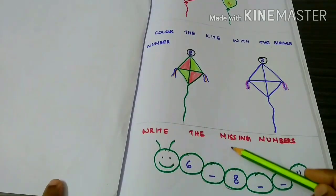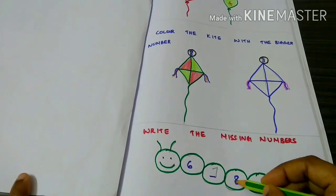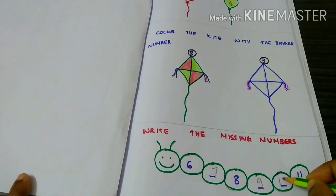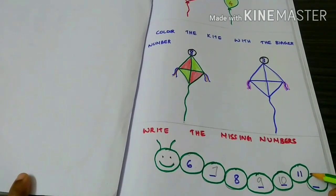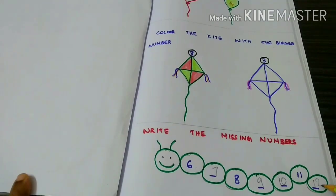Write the missing numbers. 6, 7, 8, 9, 10, 11, 12. 6, 7, 8, 9, 11, 13, 5.